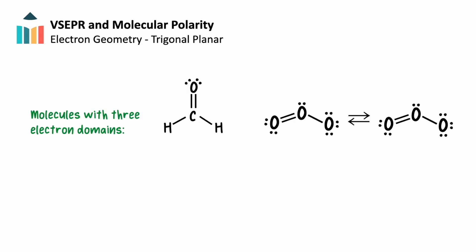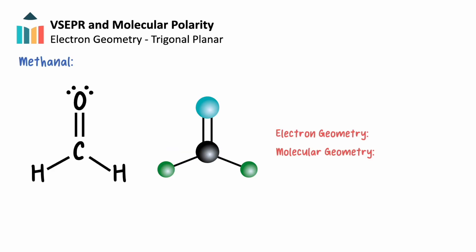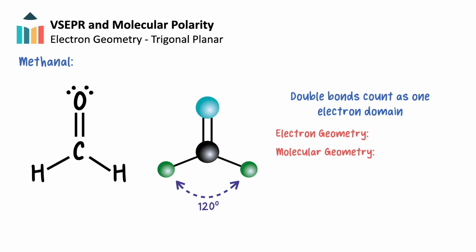To further our understanding of molecular geometries, let's briefly examine molecules with three electron domains by taking a look at methanal and ozone. Starting with methanal, the central carbon has three electron domains. Note that the double bond only counts as one electron domain, and not two. The greatest separation of each of the three domains occurs on a single plane, creating bond angles of 120 degrees and the shape of a flat triangle. The electron and molecular geometries for methanal will be the same, as there are no lone pairs of electrons. These geometries are aptly described as trigonal planar.